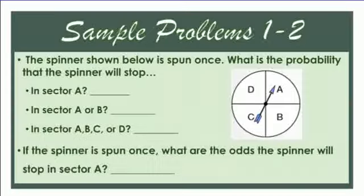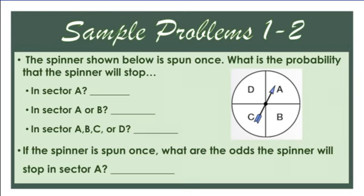The spinner shown below is spun once. What is the probability the spinner will stop in sector A? Using the formula: favorable outcomes — sector A — over total sectors, which is four. So there is a one out of four chance of landing on A.